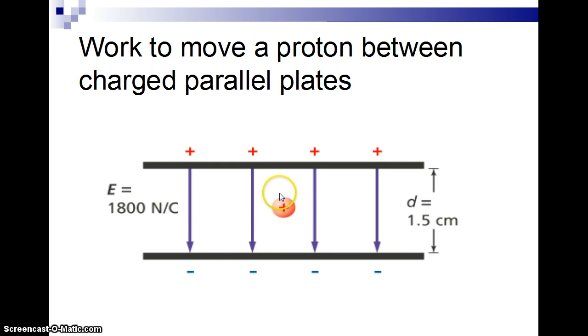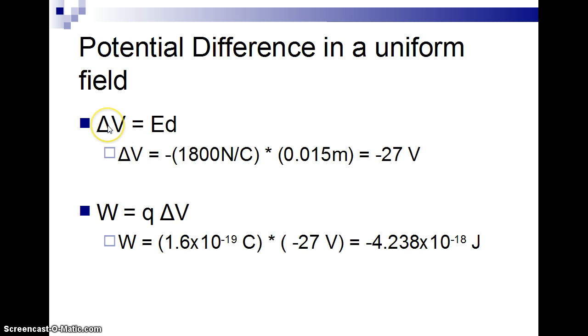So let's take a proton and move it from the positive plate to the negative plate. So in this case, it's going to be going with the electric field, so it's losing that energy. So we have an electric field of 1,800 newtons per coulomb. It can also be given to you in the units of volts per meter. And the distance between the two plates is one and a half centimeters. So we can get that the voltage is electric field times the distance, and we get a negative sign because it's going with the electric field. So the voltage is 1,800 newtons per coulomb times 0.015 meters, which is negative 27 volts.